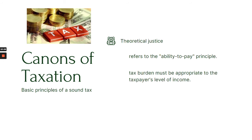The third canon is theoretical justice. Theoretical justice refers to the ability-to-pay principle, which means that the burden to pay tax must be proportionate to the taxpayer's level of income. If your income is large, you pay more tax; if your income is small, you pay less tax. It is not an equal amount for everyone — it would not be fair to impose the same tax on those with high incomes and those with low incomes. The tax must be fair and leveled to your capacity and income.